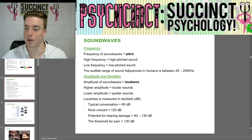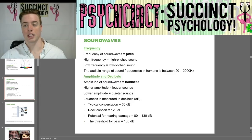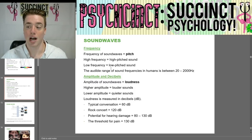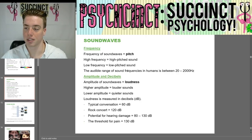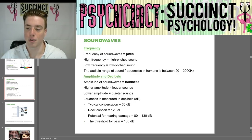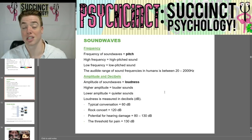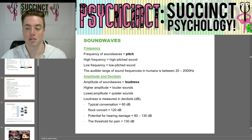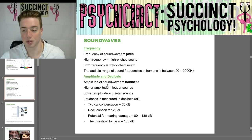Moving on from light waves, we have sound waves. Frequency of sound waves equals pitch — high frequency equals high-pitched sound, low frequency equals low-pitched sound. The audible range of sound frequencies in humans is between 20 and 20,000 hertz. Amplitude of sound waves equals loudness — higher amplitude means louder sounds, lower amplitude means quieter sounds. Loudness is measured in decibels. Typical conversations are about 60 decibels; a rock concert about 120 decibels.